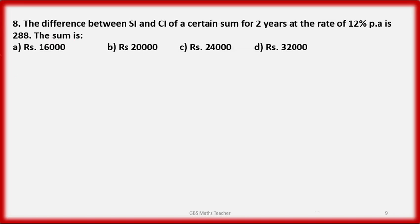Question 8: the difference between SI and CI of a certain sum for 2 years at the rate of 12% per annum is Rs. 288. Find the sum. The difference between simple interest and compound interest for 2 years at 12% is Rs. 288.